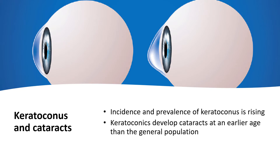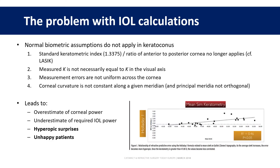The more advanced the keratoconus, the more difficult it becomes. Keratoconus presents a whole array of problems for biometry and IOL calculations. Similar to the situation after refractive surgery, the normal biometric assumptions that we rely on no longer apply. The standard keratometric index is no longer accurate — this is a fictitious index that enables calculation of total corneal power from just the anterior keratometry, and we use this all the time when doing normal lens calculations, but it does rely on the anterior and posterior corneal relationship being within normal limits.